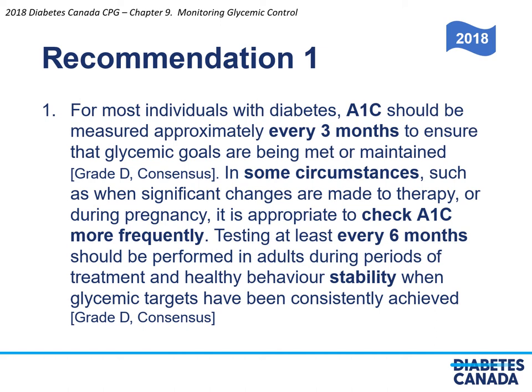Recommendation 1: A1C should be measured approximately every 3 months to ensure that glycemic goals are being met or maintained. In some circumstances, such as when significant changes are made to therapy or during pregnancy, it is appropriate to check A1C more frequently. Testing at least every 6 months should be performed in adults during periods of treatment and healthy behavior stability when glycemic targets have been consistently achieved.